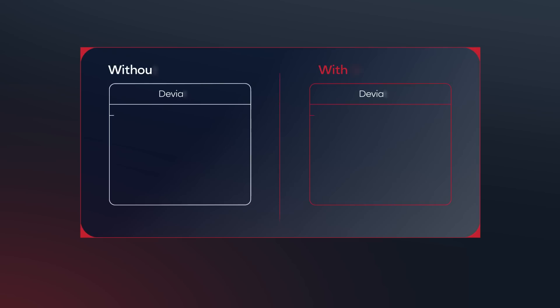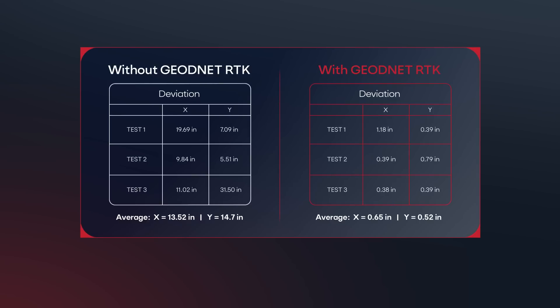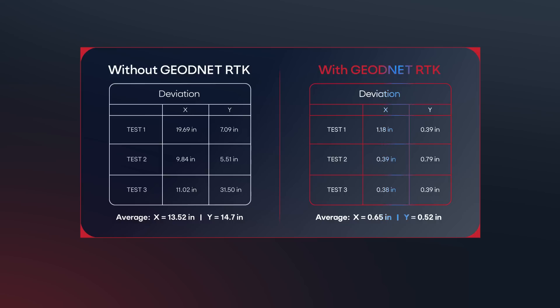After running multiple return to home tests, we observed a clear difference in landing accuracy between RTK enabled flights and those without. With RTK enabled, the SkyScout consistently demonstrated sub-inch accuracy. Here are the sample deviations from the original takeoff points. These results show an average deviation well under one inch, thanks to the centimeter level corrections provided by GeoNet's RTK network.